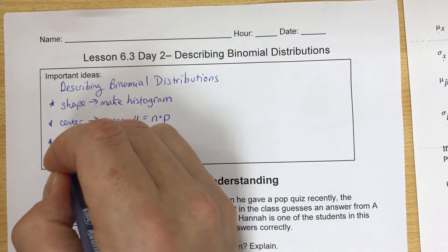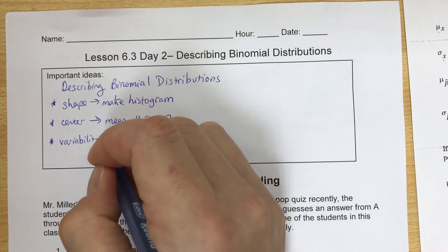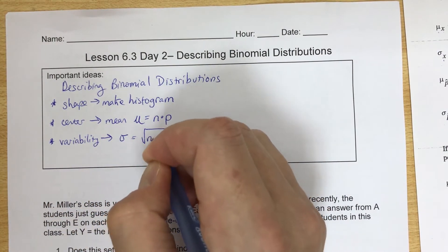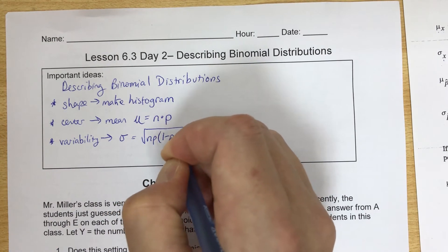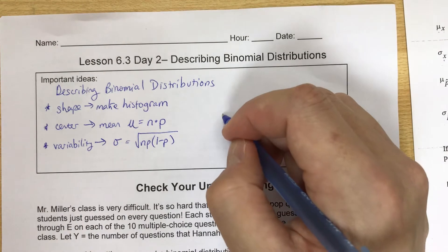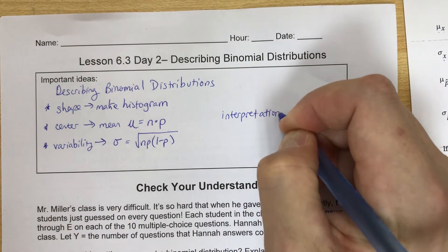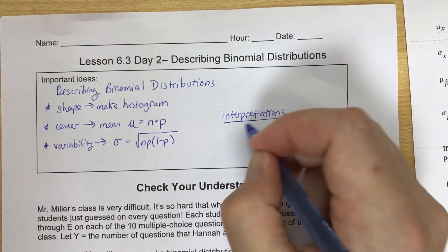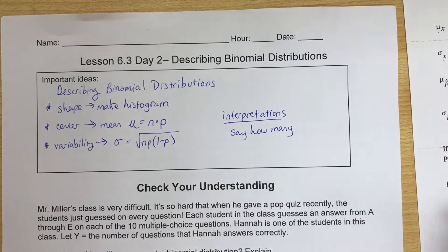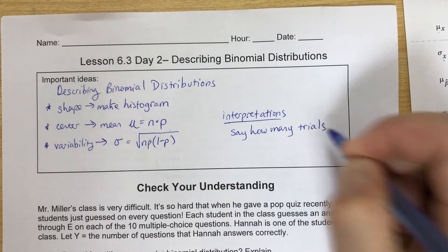In terms of the variability or the spread, we want to use the standard deviation, which is the square root of n times p times 1 minus p. When we are doing the interpretations, we want to make sure that we also say how many trials. On the other side, we were taking five shots, five penalty kicks. We want to make sure that we specify that.